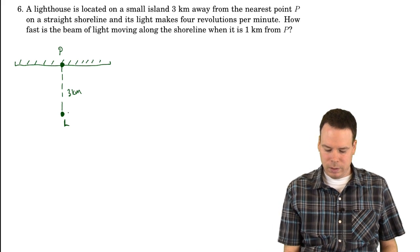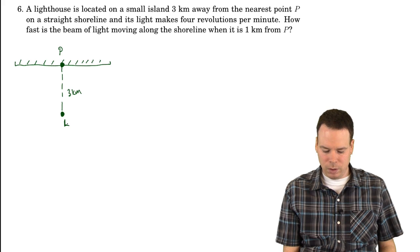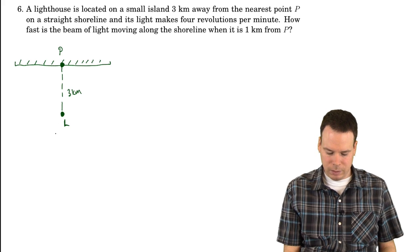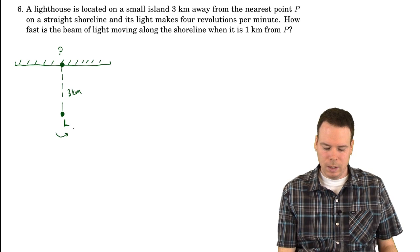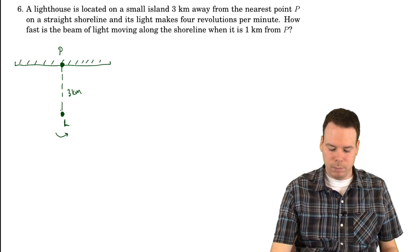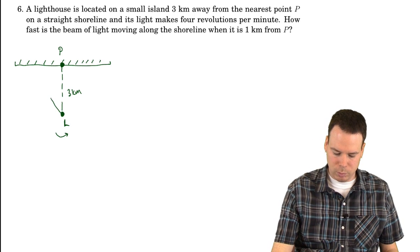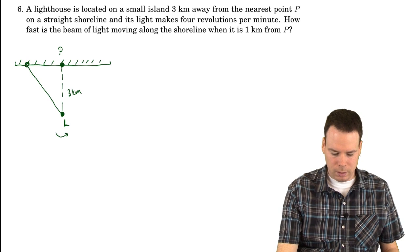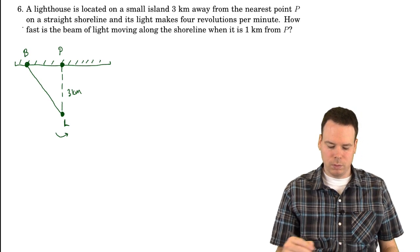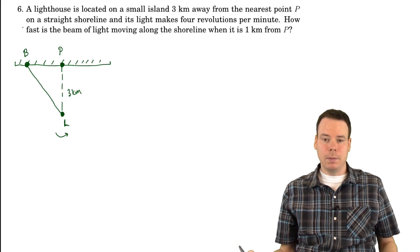We know that the light is revolving on the lighthouse, so I'm just going to give it a direction to conjure up some sort of mental image about what's going on. As the beam of light shines from the lighthouse, a typical example would look like this — the beam of light hits the shore at some point. Let's call that point B, for beam.